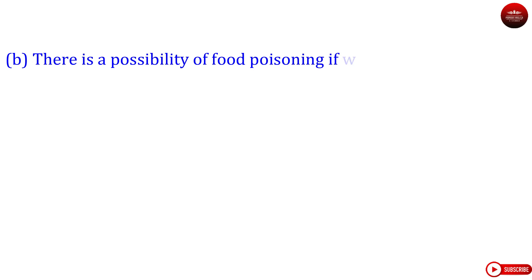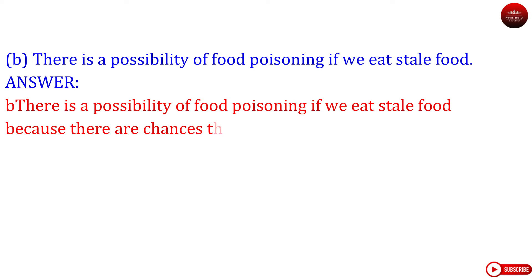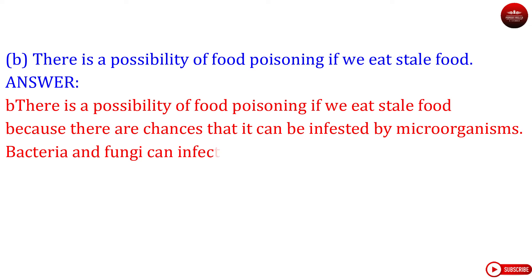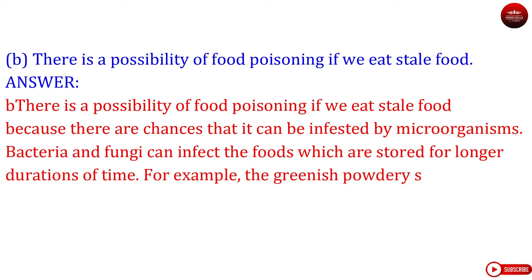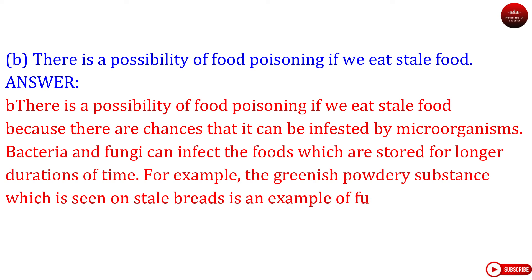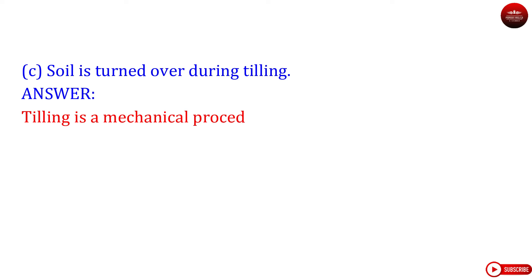After heavy rainfall and floods, water gets accumulated at places and acts as breeding grounds for mosquitoes and other vectors. These vectors lead to transmission of the microorganisms to their host and result in the development of disease. For example, malaria is caused by a parasite which is transmitted by a mosquito. Question B: There is a possibility of food poisoning if we eat stale food. Answer. There is a possibility of food poisoning if we eat stale food because there are chances that it can be infested by microorganisms. Bacteria and fungi can infect foods which are stored for longer durations of time.